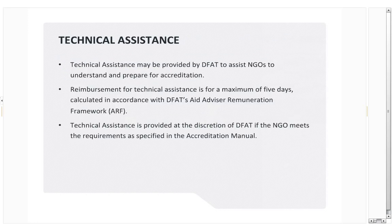DFAT does offer technical assistance to NGOs to help prepare for accreditation. To be eligible, you must either be a non-accredited NGO seeking accreditation, or a base-accredited NGO with an RDE equal to or less than $150,000 and equivalent to five or fewer full-time staff, and you must also be within 12 months of your re-accreditation due date. If approved, up to five days of technical assistance in accordance with DFAT's advisor remuneration framework will be reimbursed. To apply, send an email to accreditation.gov.au. All information on technical assistance can be found on page 12 of the accreditation manual.